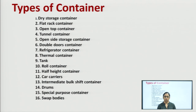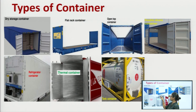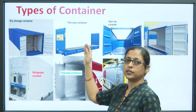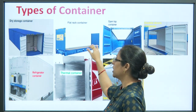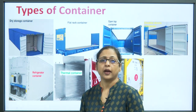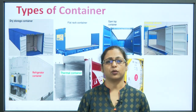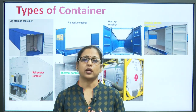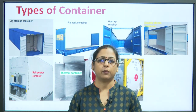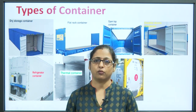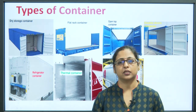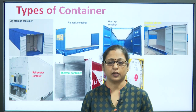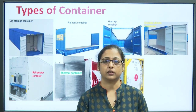The flat rack container is one in which both sides can also be brought down, converting it into a flat surface. Any product or inventory that is bigger than the size of the container can also be kept or stacked on these containers, making it very easy to carry them over longer distances.